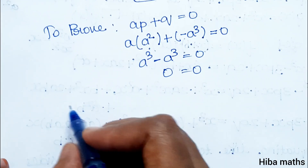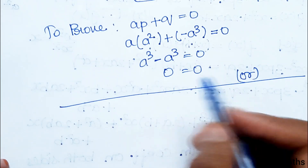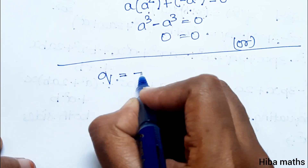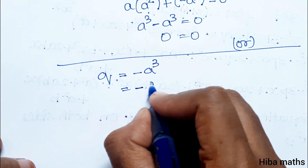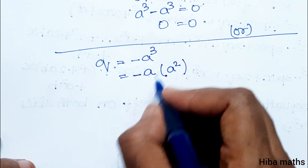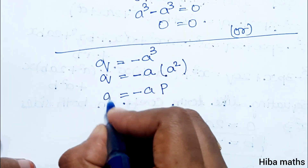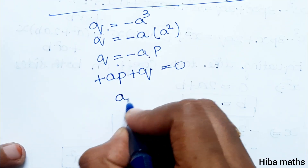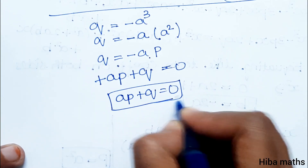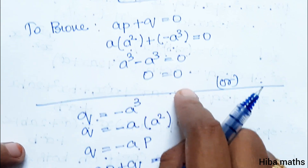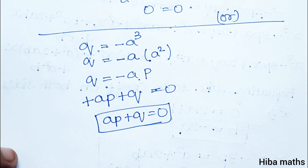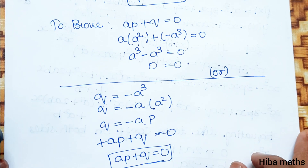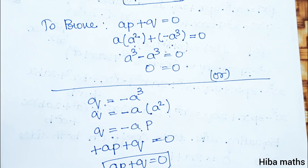This is another method from the book. We substitute again: q equals minus a cube, which equals minus a into a square, and a square value is p. So q equals minus ap, meaning ap plus q equals 0. Hence proved.